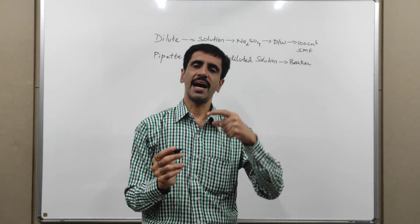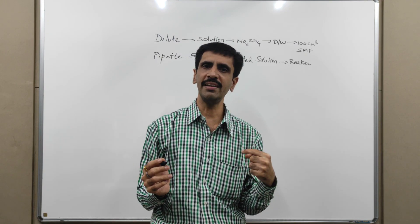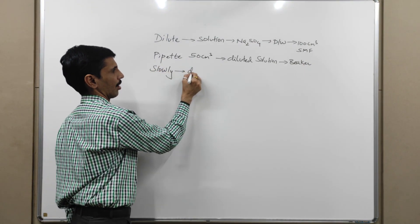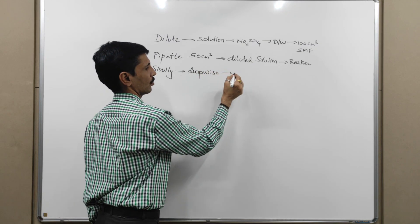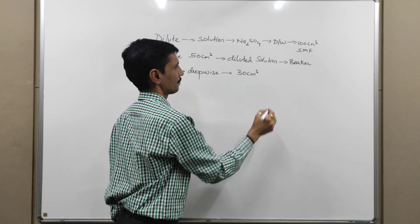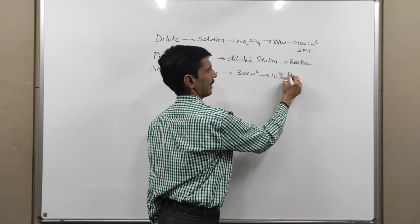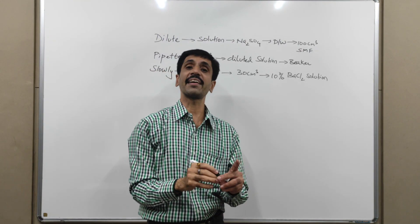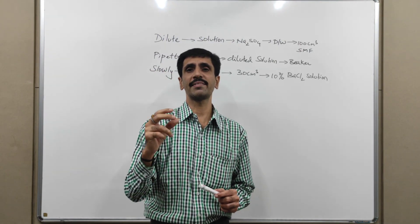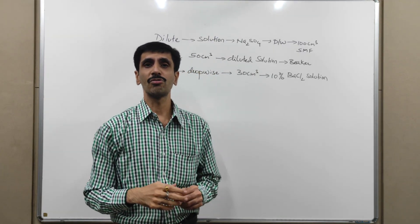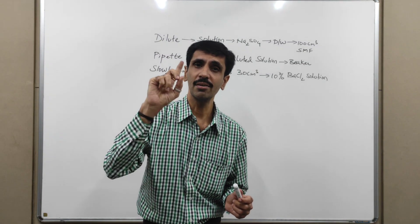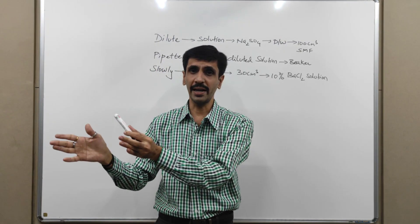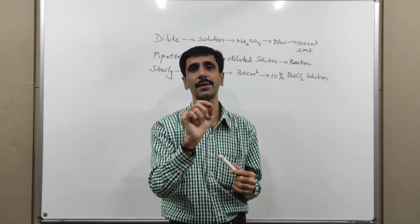The given sodium sulfate solution needs to be converted into a precipitate. Very slowly — dropwise — we are going to add approximately 30 cm³ of 10% BaCl2 solution, with constant stirring. The reaction which takes place is sodium sulfate plus barium chloride, which results in a white precipitate of barium sulfate.